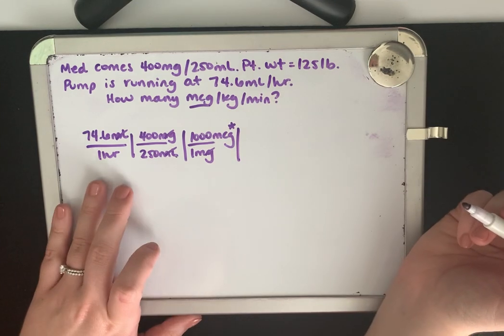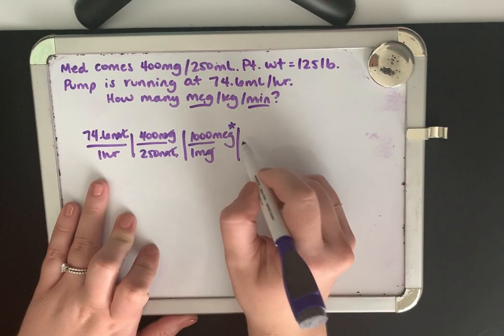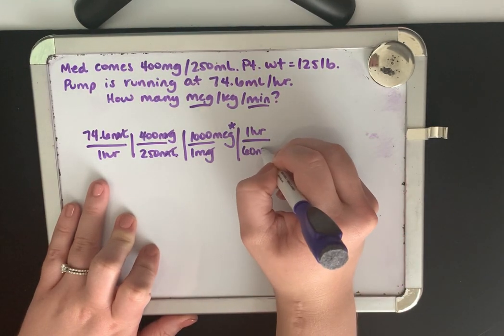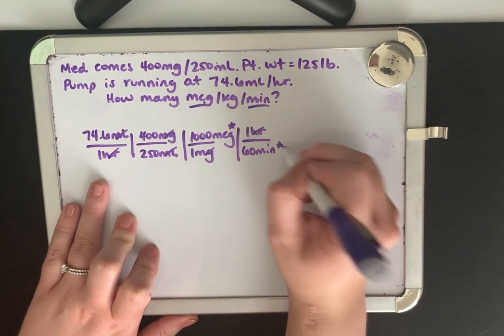Next thing is that we need it per minute. So we have one hour down here. Let's cancel it out. So put it on top. There's one hour, 60 minutes. Our hours cancel out and now we're left with minutes.